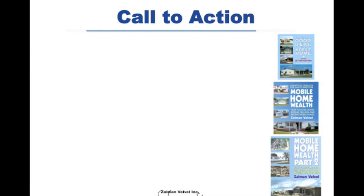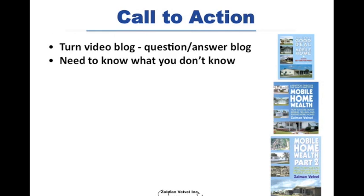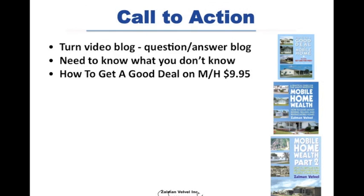I'm told that I have to give you a call to action. I spoke to an internet guru and he said I was not giving my people a call to action. So I would like to turn this video blog into a question and answer blog so that I can answer and help you with problems each week. In order to do that, you need to know what you don't know. I've written three books that I want you to buy. The first book is a real simple one called 'How to Get a Good Deal on a Mobile Home.' I wrote it basically for people that wanted to buy a mobile home and live in it. It shows you how to get a good deal on anything, using mobile homes as the example. It's in PDF format so when you buy it, it instantly gets sent to you.